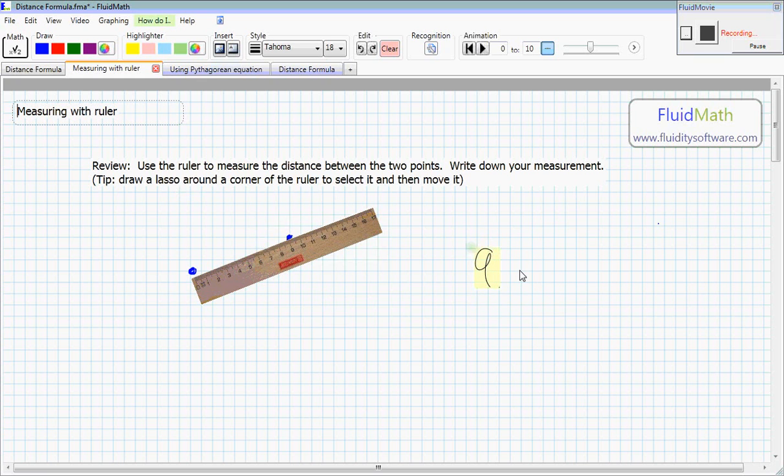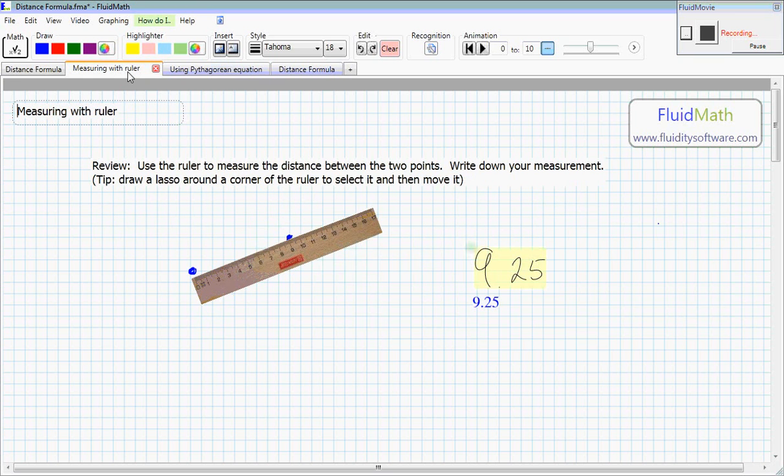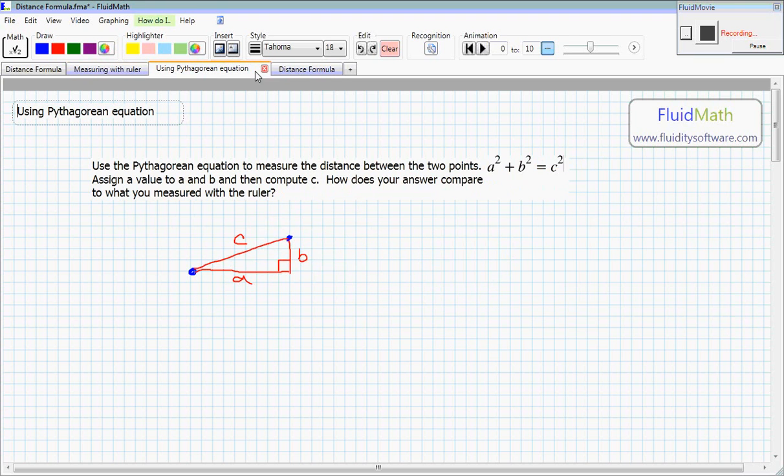So let's just write nine point two five. Okay, so that's our guess for this. Moving on, let's go to the next tab. We have these same two points again. Here's the picture with the ruler, and we see nine point two five is our guess. Now we're on a new tab with the same two points in blue.